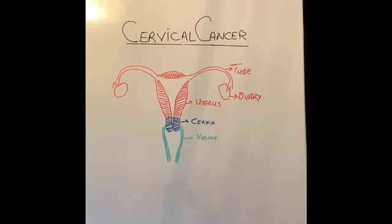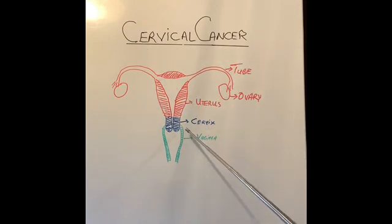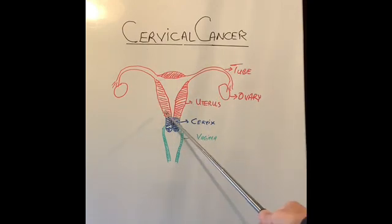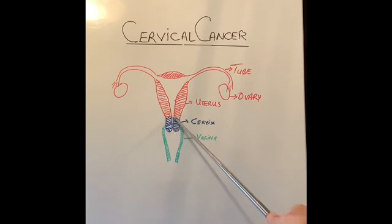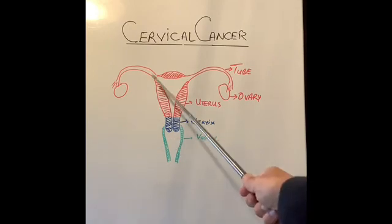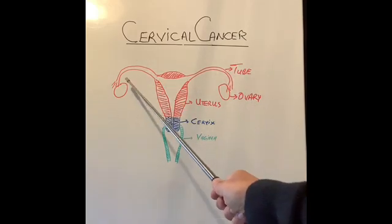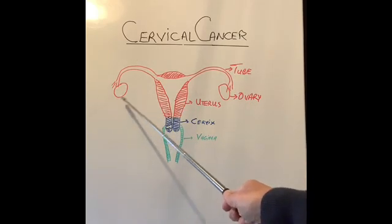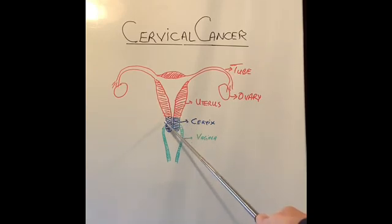Now, what is a cervix? I have drawn a diagram of female genitalia here. In green I have drawn the vagina. In blue I have drawn this structure here, which is like a very thick tube-like structure with a gap in the middle. This is called the cervix, which joins the vagina to the main body of the uterus. From the uterus arise two fallopian tubes, and the ovaries are attached to the end of the fallopian tubes. So cervical cancer develops in this part of the anatomy called the cervix.